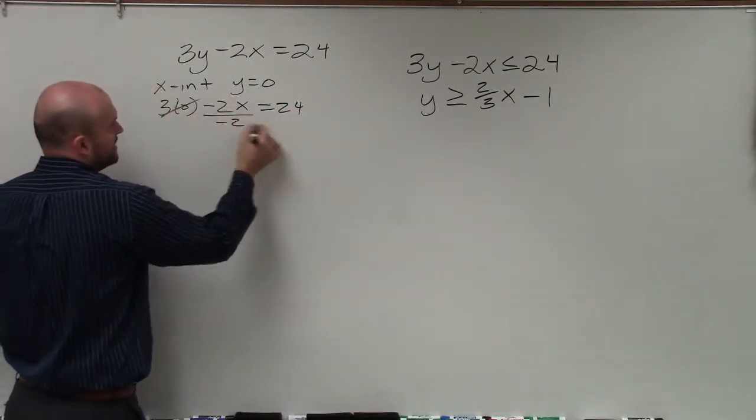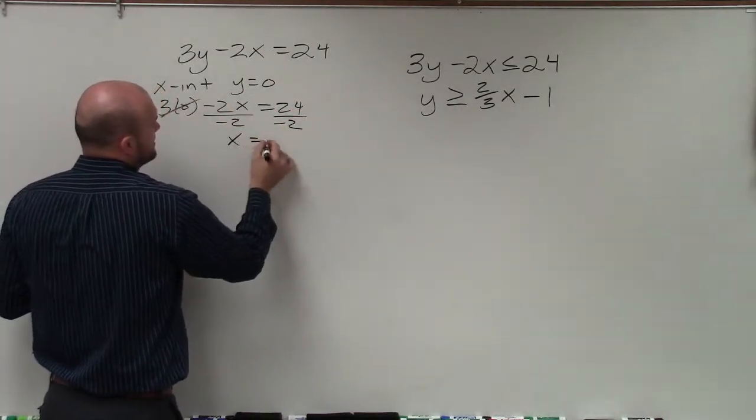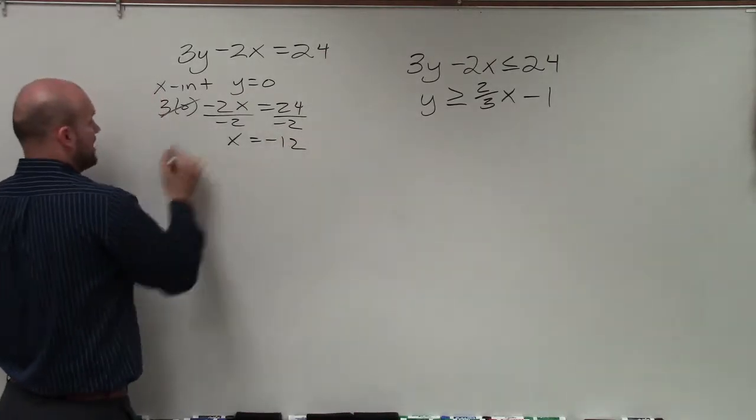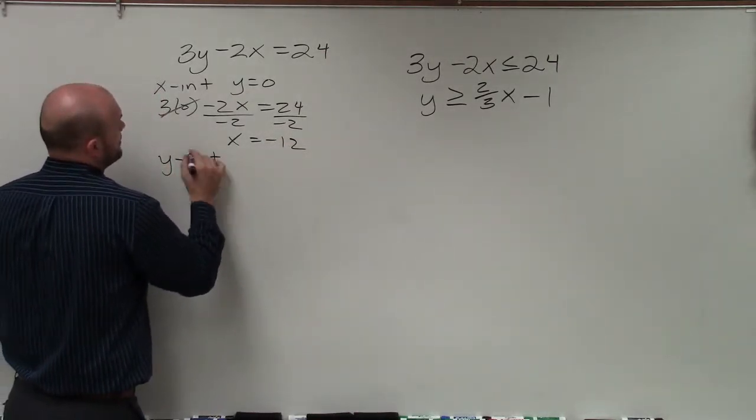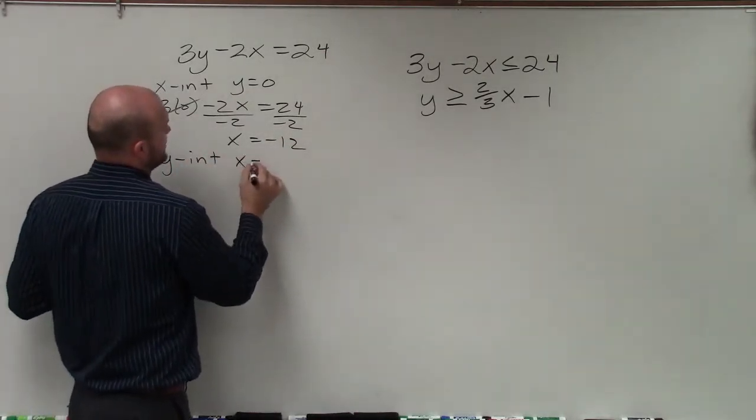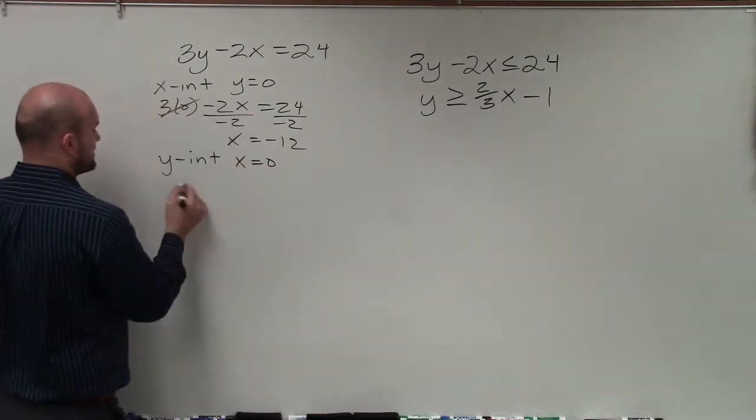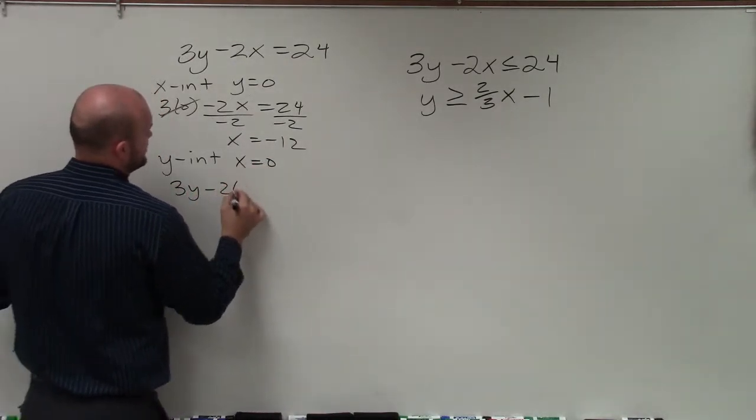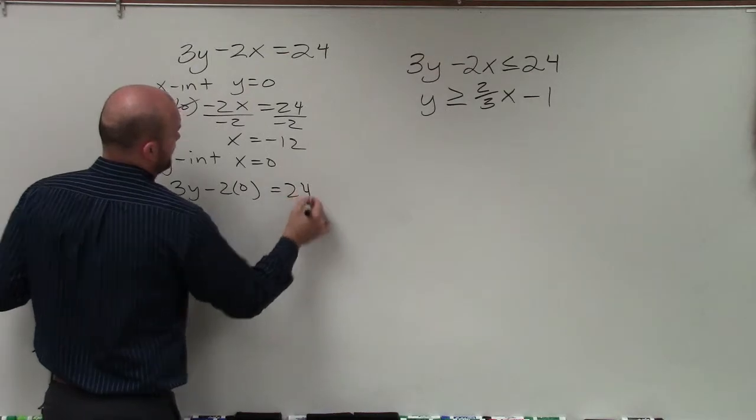That goes to 0, divided by negative 2, x is equal to negative 12. Then, to determine the y-intercept, I basically just put 0 in for x,